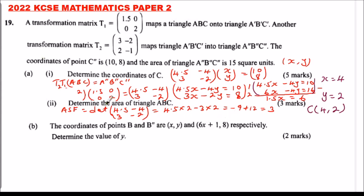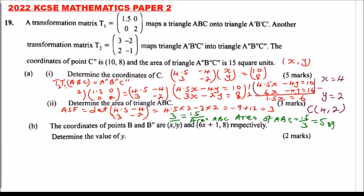The area scale factor equals 3, meaning the determinant equals the area of the image divided by the area of the object. So 3 equals 15 divided by the area of ABC. Cross multiplying, the area of triangle ABC equals 15 divided by 3, which equals 5 square units.